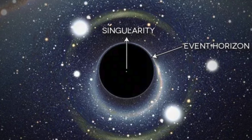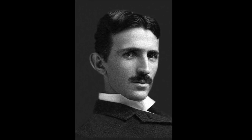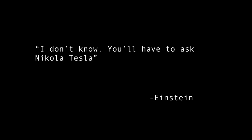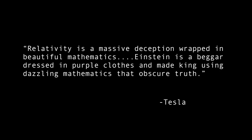However, the biggest problem for the Big Bang is that it's based on Albert Einstein's theory of relativity, a theory which is nonsense if you ask many experts, including Einstein himself. Or you could ask the father of nuclear physics Ernest Rutherford, Nobel laureate physicists Robert Milliken and Albert Michelson, Ernst Mach — who the speed of sound is named after — or Einstein's favorite scientist, Nikola Tesla. Einstein was once asked, what's it like to be the smartest man alive? He stated, 'I don't know, you'll have to ask Nikola Tesla.' It should be noted Tesla believed theoretical science was a waste of time, once stating: 'Today scientists have substituted mathematics for experience, and they wander off through equation after equation and eventually build a structure which has no relation to reality. The scientists of today think deeply instead of clearly. One must be sane to think clearly, but one can think deeply and be quite insane.' When asked about Einstein, Tesla referred to him as a long-haired crank. On the theory of relativity, he stated: 'Relativity is a massive deception wrapped in beautiful mathematics. Einstein is a beggar dressed in purple clothes and made king using dazzling mathematics that obscure the truth.'